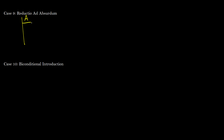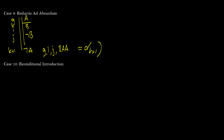Case 9: reductio ad absurdum. If we assume a and prove b and prove not-b, then we get not-a on line k+1. This will be from lines g, i, j by RAA — and of course that's our alpha_{k+1} on the bottom.